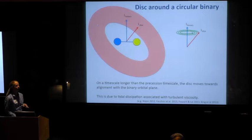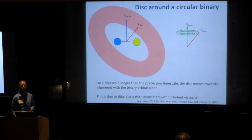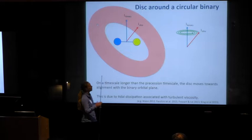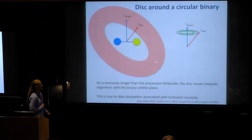Another difference between the test particle case and the disk is that we have dissipation within the disk. This means we're moving to a lower energy state. So instead of the disk precessing around the binary angular momentum vector at the same inclination, it instead spirals in, moving towards alignment with the binary angular momentum.